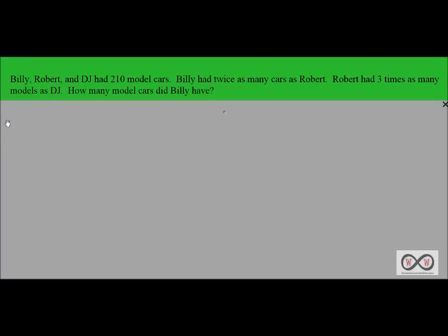Billy, Robert and DJ had 210 model cars. Billy had twice as many cars as Robert. Robert had three times as many models as DJ. How many model cars did Billy have?